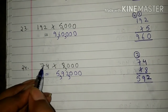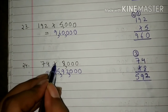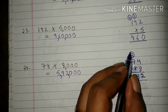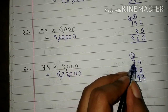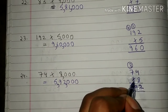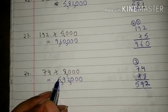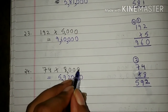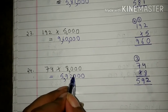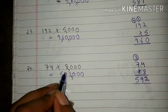24th question: 74 into 8000. Students, first we will multiply 74 by 8. So 8 into 4 is 32. 2 we have written here and 3 will be carried. 8 into 7 is 56 plus 3 is 59. Students, 74 multiplied by 8 will give 592. So students, we will write 592 here, and here 0 is written 3 times, that is 0 0 0. So we will write 0 three times here also. Now students, 74 multiplied by 8000 will give 592,000.